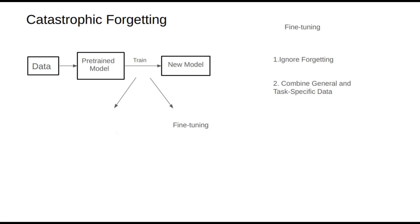A second approach is to combine general and task-specific data. A common method is to blend general instructional data with task-specific data during training. This combination helps preserve multiple abilities without significantly degrading others. For continual pre-training, combining general and domain-specific data can be beneficial, though finding the right ratio between these data types — for example, how much general versus domain-specific data to include — is crucial.